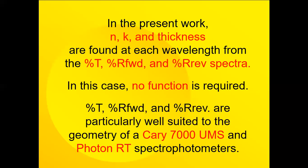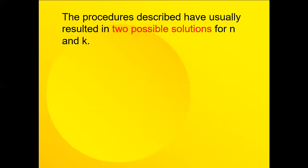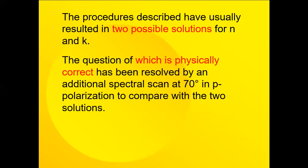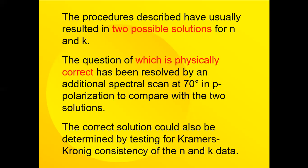The procedures described have usually resulted in two possible solutions for N and K. The question of which is the physically correct solution has to be resolved by an additional spectral scan, and we choose 70 degrees in P polarization to compare the two solutions. The correct solution could also be determined by testing for Kramers-Kronig consistency of the N and K data.